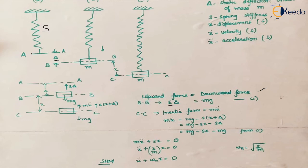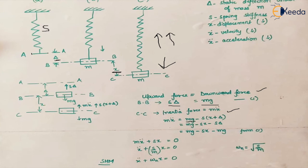If we pull the mass down causing further deflection in the spring, the new equation is: the inertia force m×x-double-dot equals the weight of the system minus the spring stiffness acting upward. The total spring force for the system is S into (x plus delta), which expands to S×x minus S×delta. Since S×delta equals mg, these two terms cancel out.